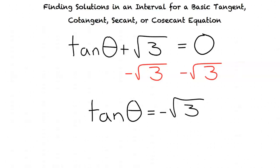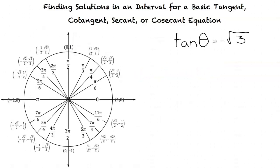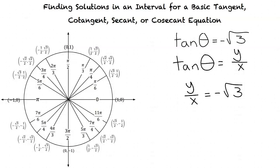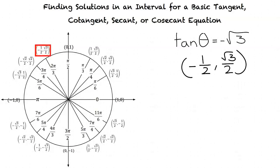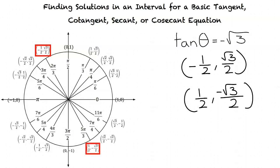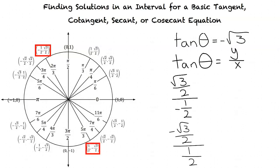We have solved for tangent theta, but how do we find the solutions? To find the solutions for tangent theta equals negative square root of 3, we need to identify which points on the unit circle result in negative square root of 3. Tangent theta equals y over x, so we need to find x and y values that, when divided, result in negative square root of 3. The coordinate points that result in negative square root of 3 are negative 1/2 comma square root of 3 over 2, and 1/2 comma negative square root of 3 over 2. When we substitute these into y over x, both results equal negative square root of 3.